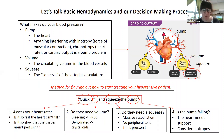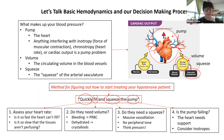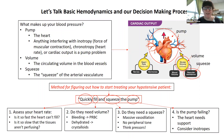What actually makes up your blood pressure? We've got three main things: our pump, our volume, and our squeeze. The pump is the heart — anything that's interfering with the inotropy (the force of muscular contraction) or the chronotropy (heart rate) is a cardiac output pump problem. For your volume, anything affecting the circulating amount of volume in your blood vessels is the problem. For your squeeze, anything affecting the squeeze of the arterial vasculature is your problem.